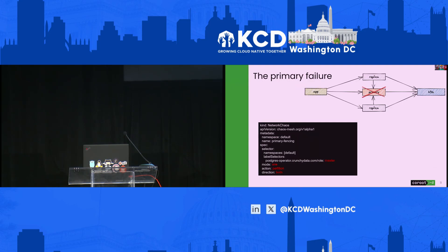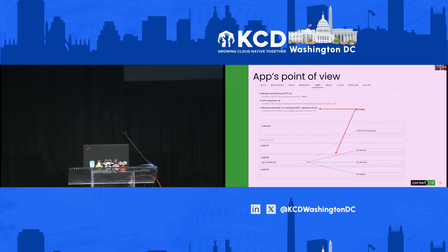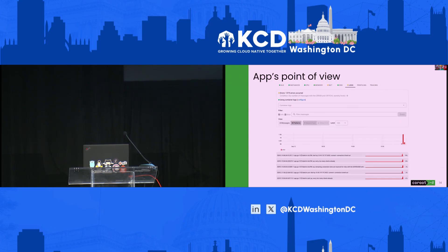Now let's try a more significant failure — we will kill the primary. From the application point of view, things are now different. We can see that we first have a gap, which corresponds to the application trying to connect with no timeout, so no requests complete at that point. Then there's a spike of errors, and then a long timeout. We can see one connection failing to the primary for a while, and a number of different errors from the application — connection timeout, but also too many clients, which often happens when a lot of requests are buffered and then many connections try to establish at the same time.